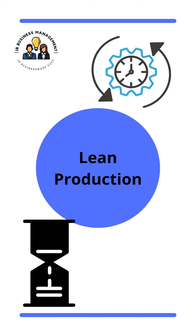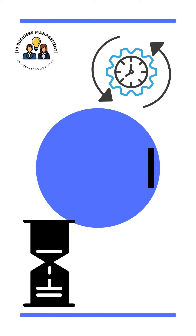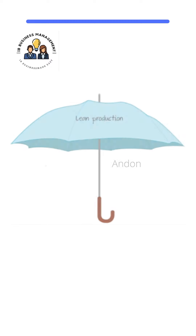Let's talk about lean production. We've covered the other methods of production in an earlier video and you can find that on our page. Lean production is an umbrella term that covers a range of techniques aimed at reducing waste to maximize efficiency. The main aim of this method is to produce high quality outputs whilst minimizing inputs.